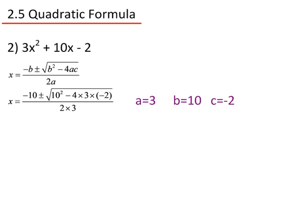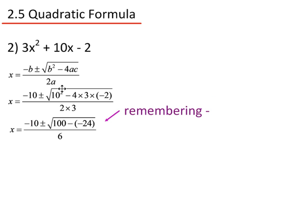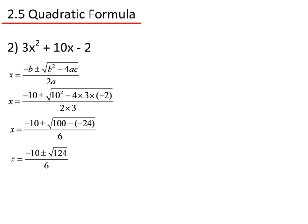Let's do the calculations. 10 squared is 100, and 4 times 3 times minus 2 is minus 24 — you need to remember that minus. 100 minus minus 24 gives 124. So x equals minus 10 plus or minus the square root of 124, divided by 6.